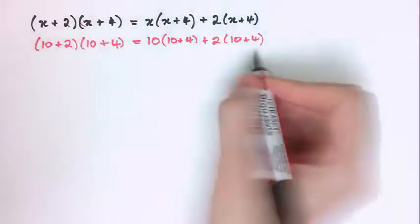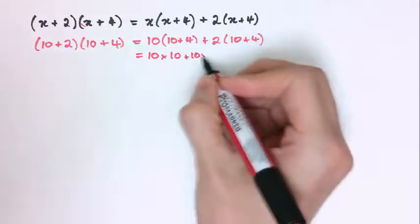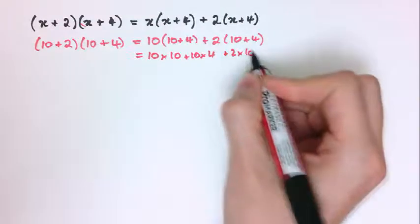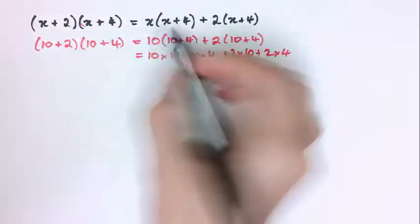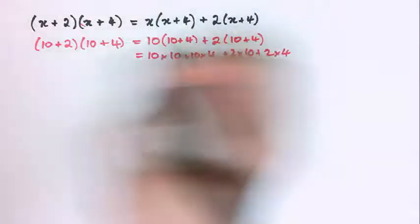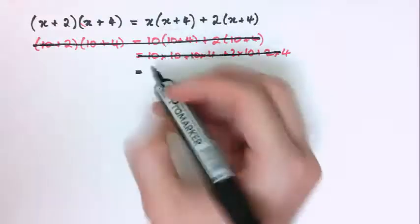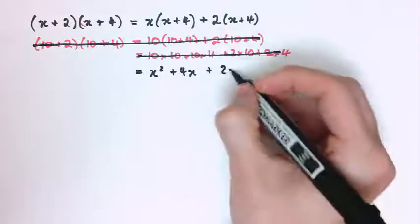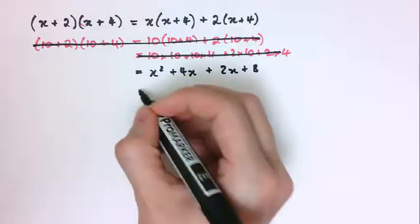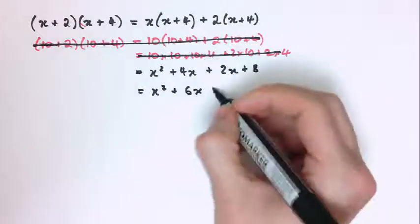It's the same as when you do 10 times 14: you can think of it as 10 times 10 plus 10 times 4, and 2 times 10 plus 2 times 4. Going back to the algebraic example, the next stage is to multiply out these brackets to get x times x, which is x squared, plus 4x plus 2x plus 8. Now we collect together like terms — 4x and 2x — giving x squared plus 6x plus 8.